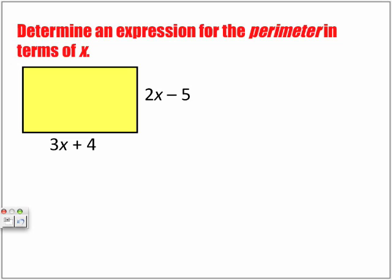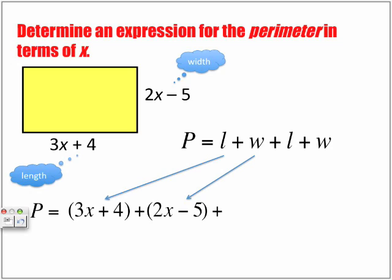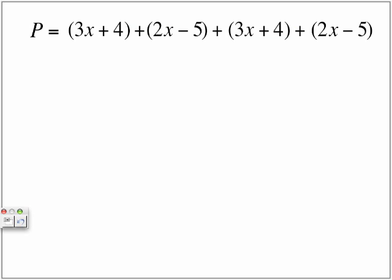Determine an expression for the perimeter in terms of x. We have our length, our width, our perimeter equation. P is equal to L plus W plus L plus W. We're adding all the sides. We have two lengths. We have two widths. P is equal to our L, which is 3x plus 4, plus our W, which is 2x minus 5, plus our L again, which is 3x plus 4, and finally, our W, which is 2x minus 5.